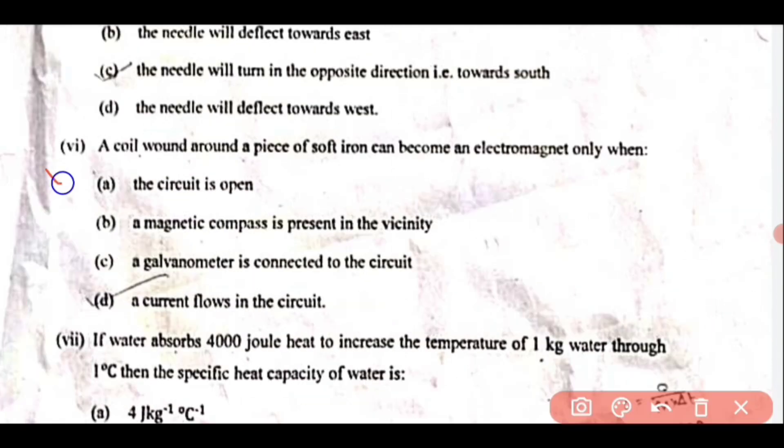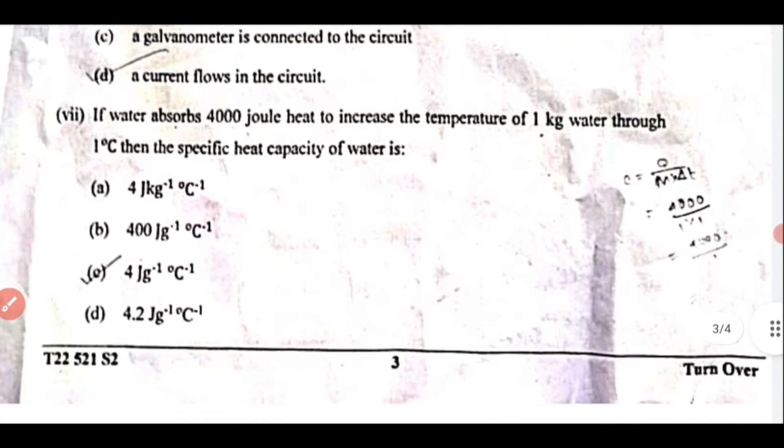Question 6: A coil wound around a piece of soft iron can become an electromagnet only when a current flows in the circuit. So option D is correct.